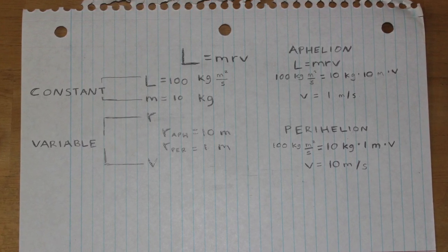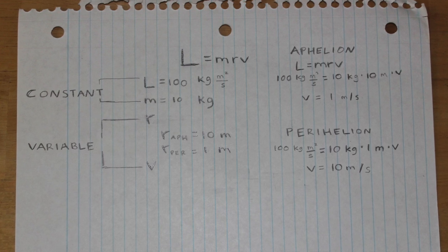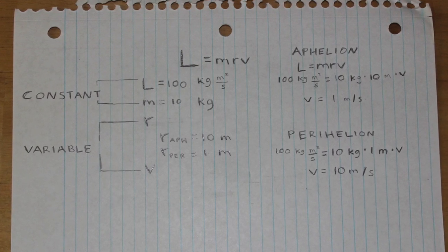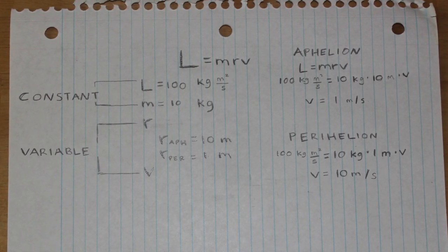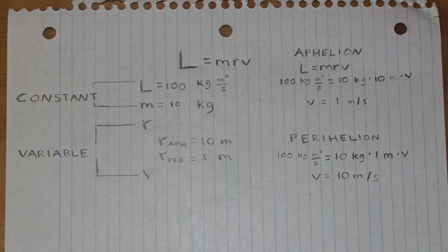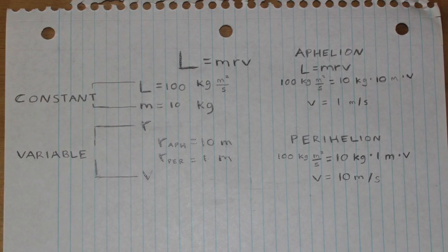This is a general pattern in planets, they travel faster closer to the sun and slower farther away from it. Hopefully these values helped you see how the change in displacement from the sun causes this.